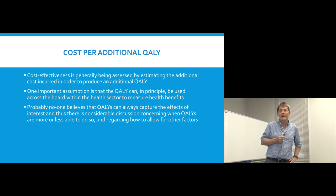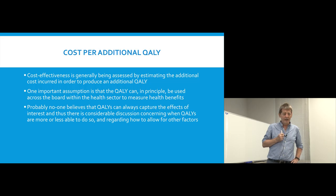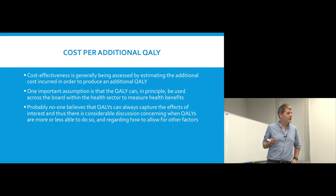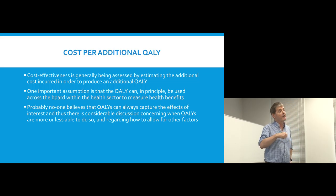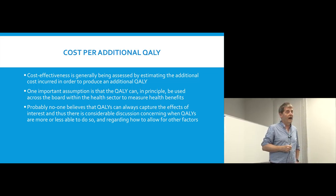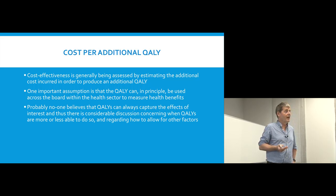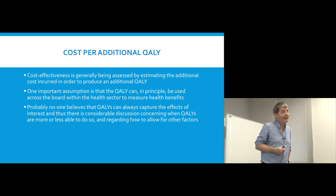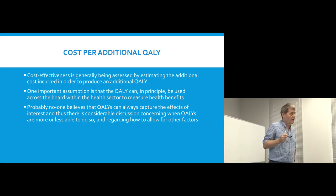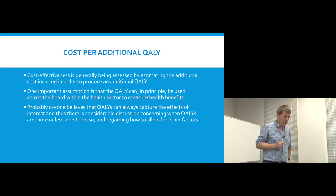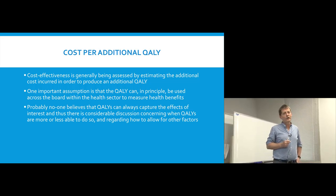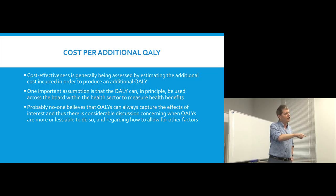The cost per additional QALY is our basic measure of cost-effectiveness, though there are lots of other measures. For example, looking at a new bisphosphonate to prevent fractures, you could look at cost per fracture prevented, or cost per additional life year gained. But the QALY is perhaps the dominant approach because in principle you can use it across lots of different areas of healthcare activity.